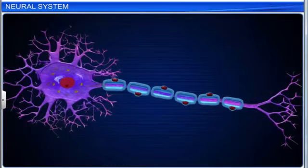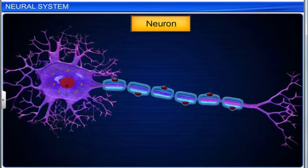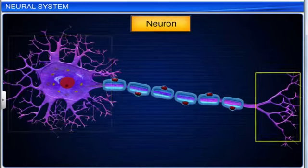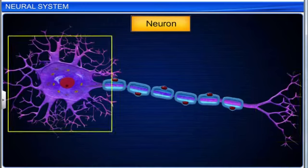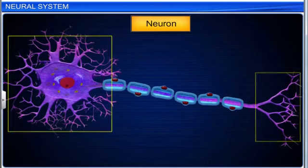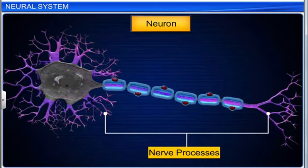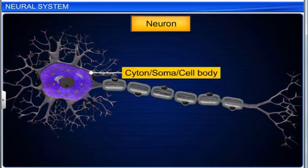Let's look at the structure and types of neurons now. A neuron is a branched nerve cell and is the longest cell in the body. The two main parts of a neuron are the cyton and nerve processes. The cyton is also called the soma, or cell body.